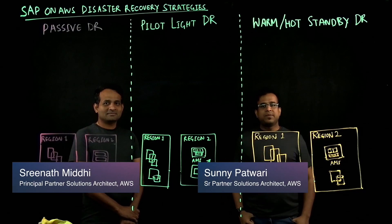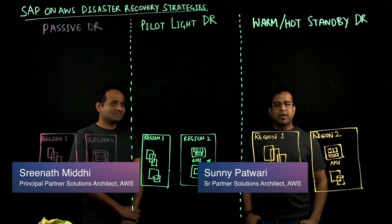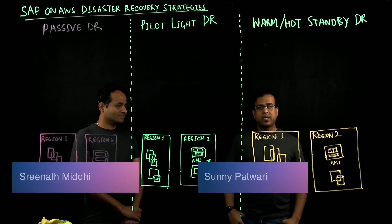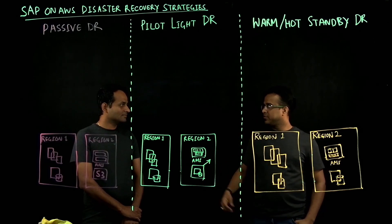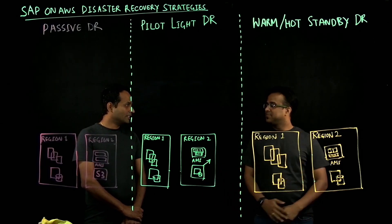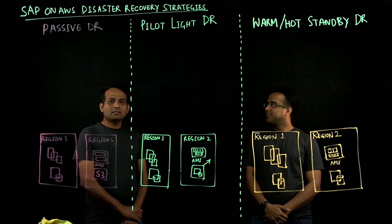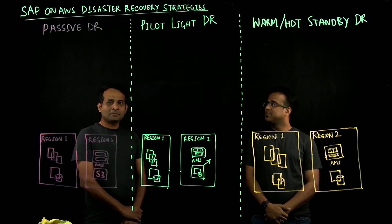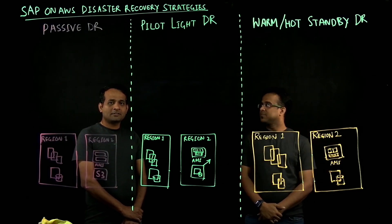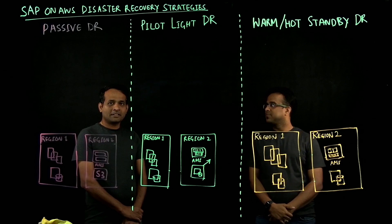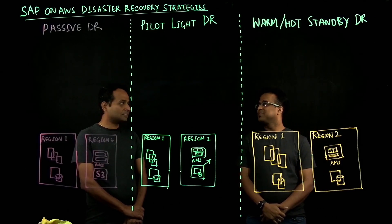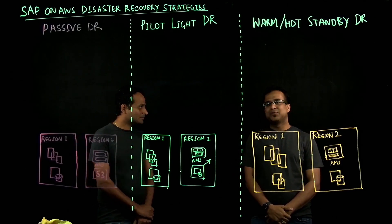Hello everyone, my name is Sunny Patwari. I'm SAP Technical Alliance Lead for North America. I'm here with Srinath Midhi. Srinath, do you want to introduce yourself? Sure. Thank you, Sunny. Hello everyone, my name is Srinath Midhi. I'm a Principal Partner Solution Architect with SAP Focus at AWS. I'm very excited to be here with you along with Sunny. Thank you, Srinath.